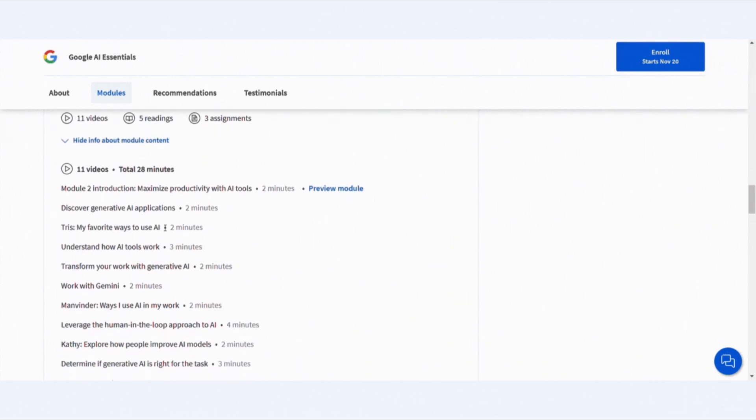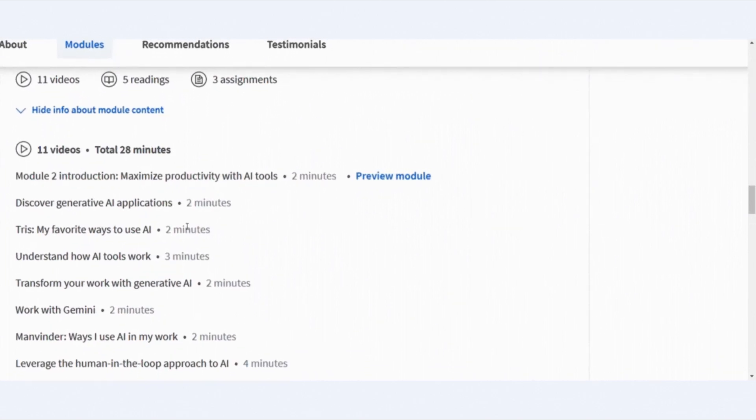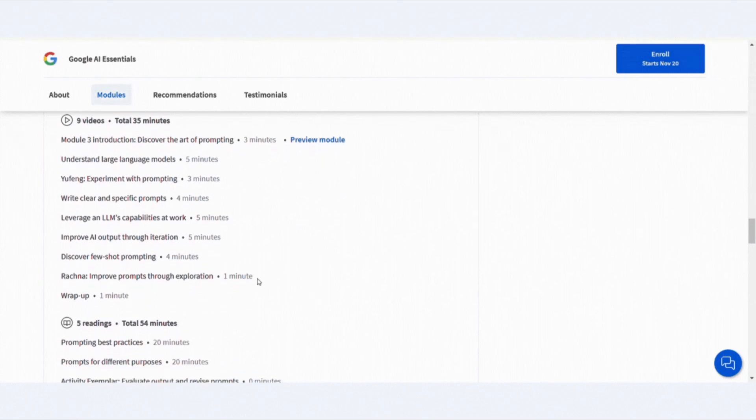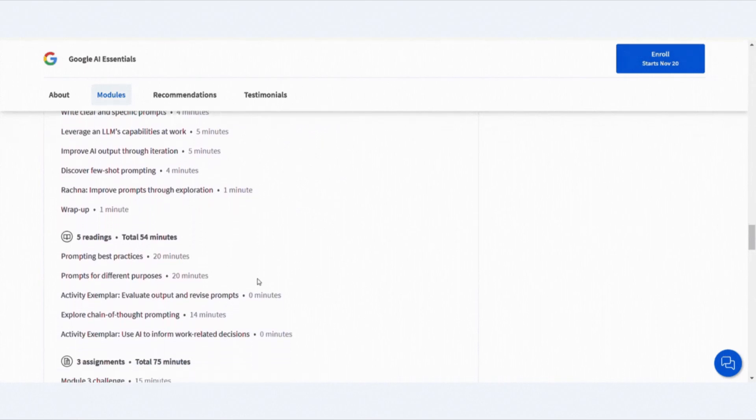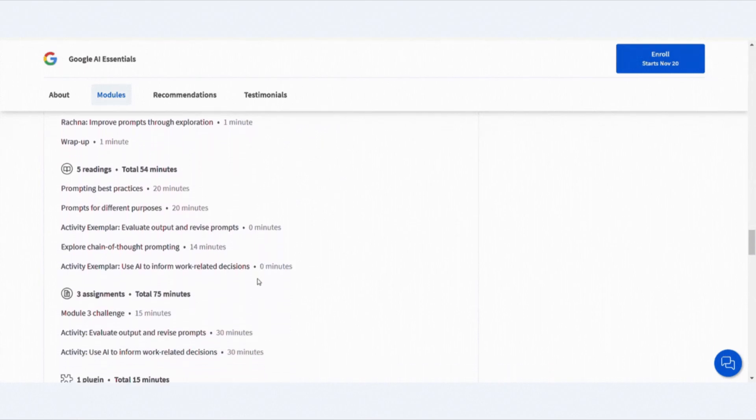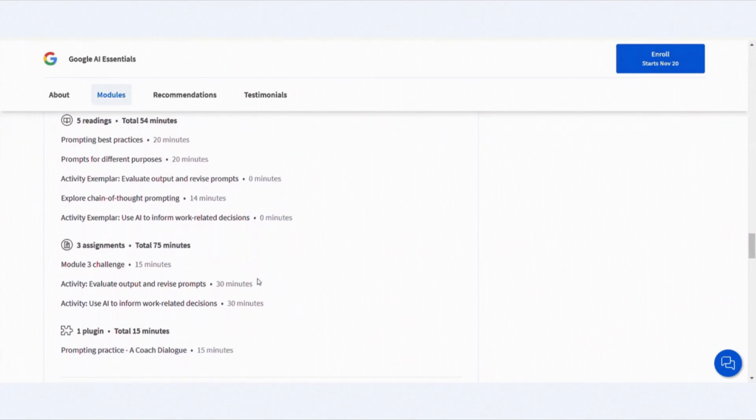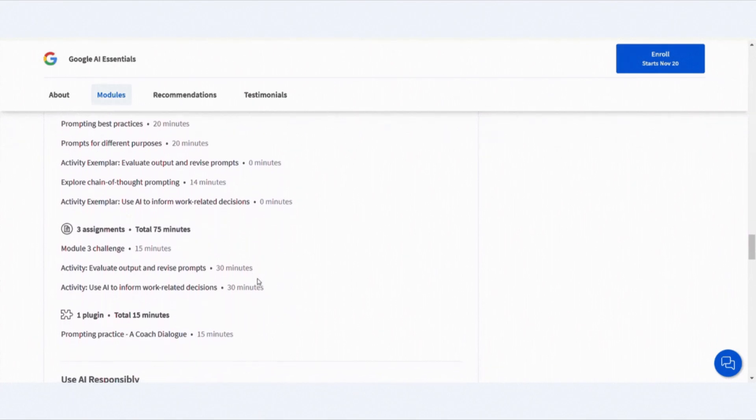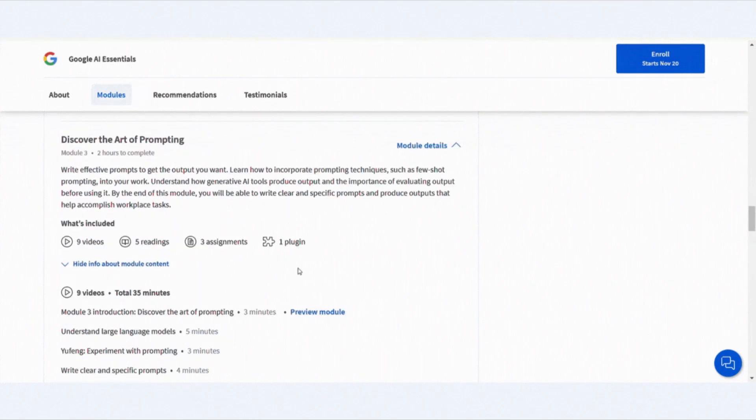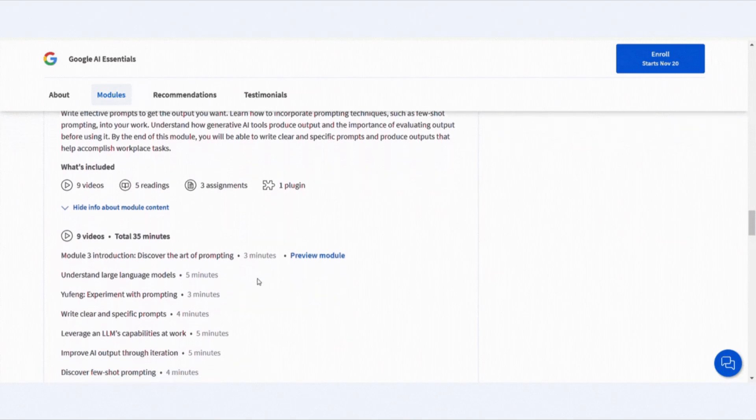After this, the course shifts to an important skill: how to work well with AI. In the section on prompt engineering and large language models, you will learn how to give clear instructions to AI tools. For example, you will see how adding details or examples can help AI provide better answers. This skill is simple to understand but very helpful for getting the most out of AI tools.